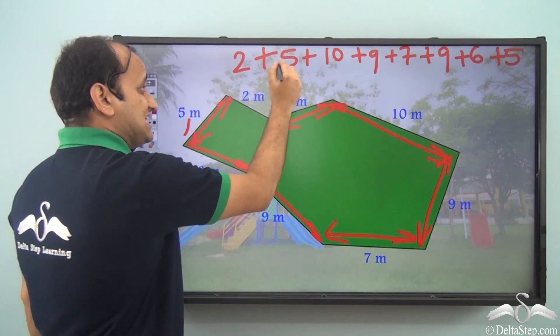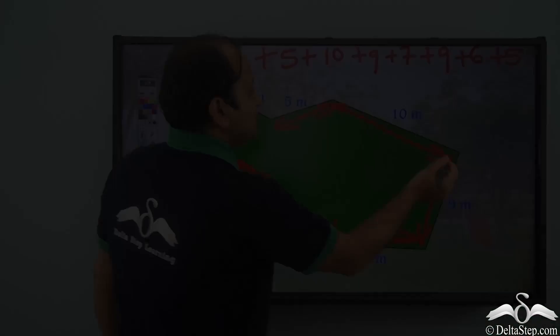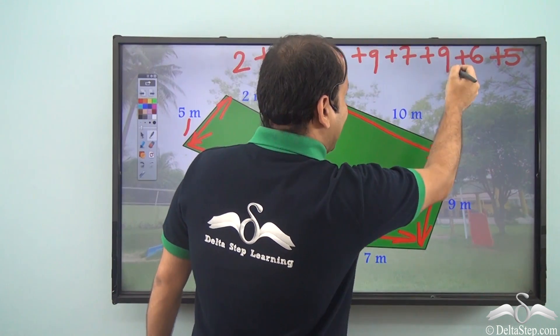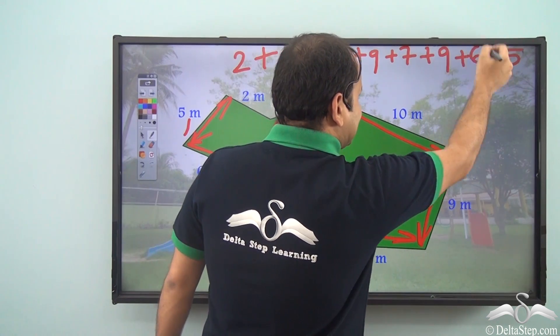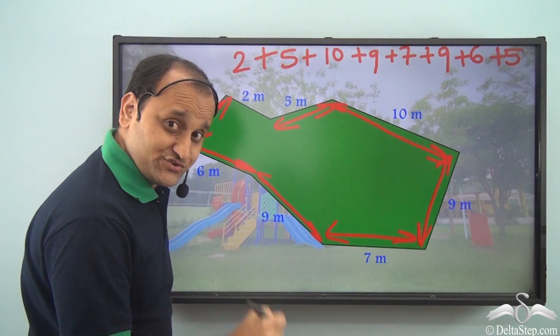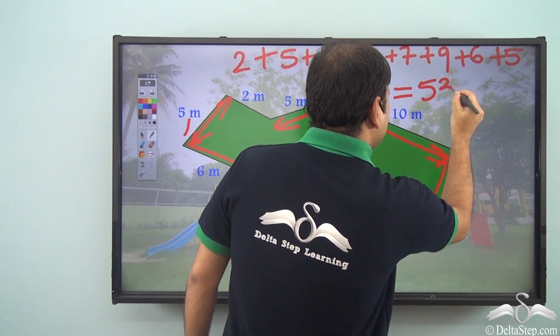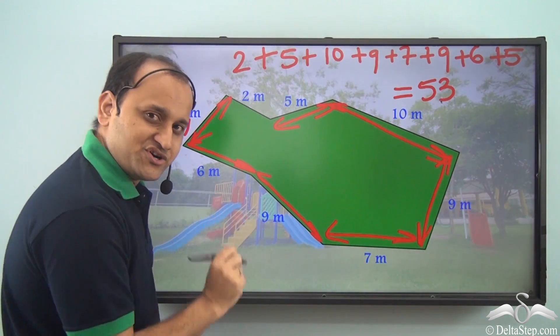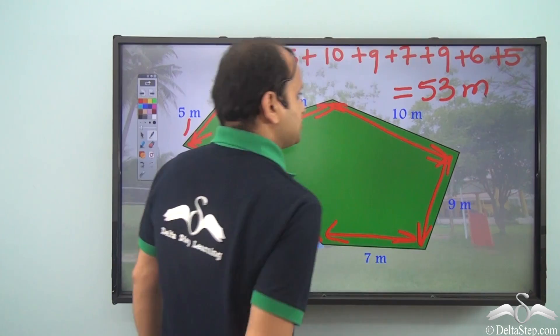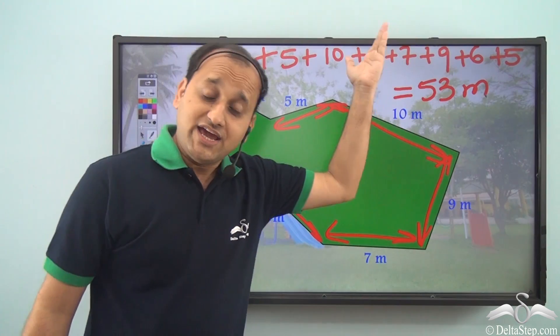2 plus 5 is 7. 7 plus 10 is 17. 17 plus 9 is 26. 26 plus 7 is 33. 33 plus 9 is 42. 42 plus 6 is 48. And 48 plus 5 will be 53. So the answer is 53. But is the answer complete? Not really. We are talking about meters, so it is 53 meters. So perimeter of this particular shape is 53 meters.